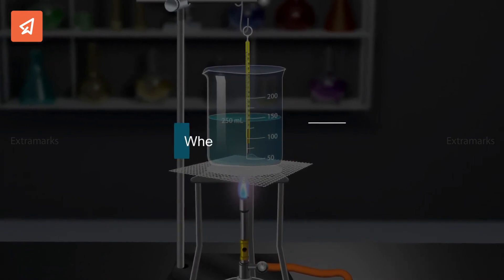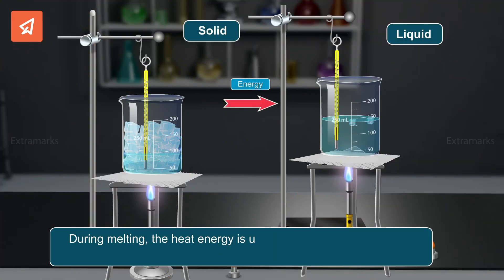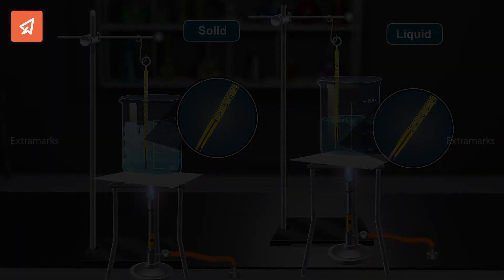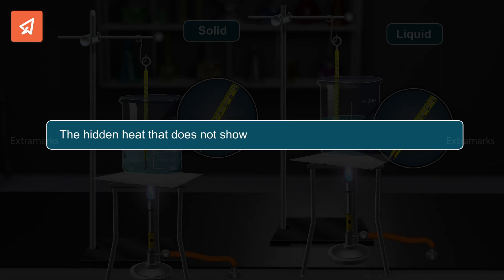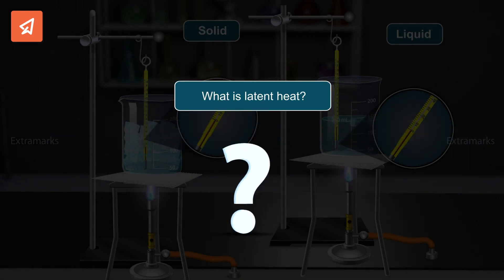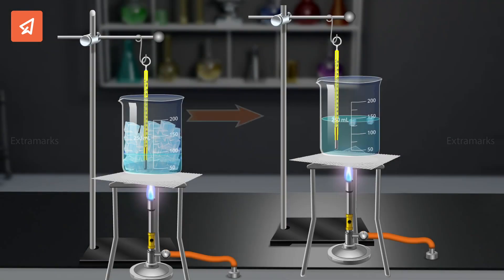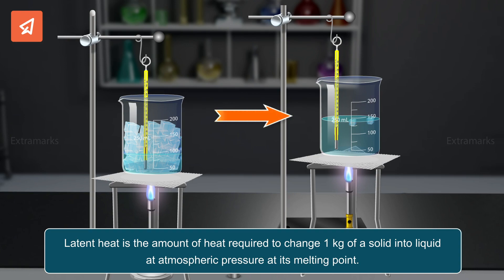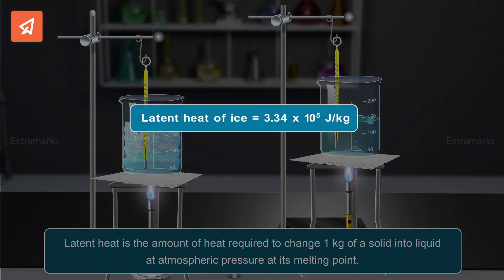An immediate question to ask is where does the heat go? During melting, the heat energy is used up to weaken the forces of attraction between the particles of ice, due to which the temperature in the thermometer does not rise. This hidden heat that does not show any visible effect is called latent heat. But what is latent heat? Latent heat is the amount of heat required to change 1 kg of a solid into liquid at atmospheric pressure at its melting point. One can note that the latent heat of ice is 3.34 into 10 to the power 5 Joules per kilogram.